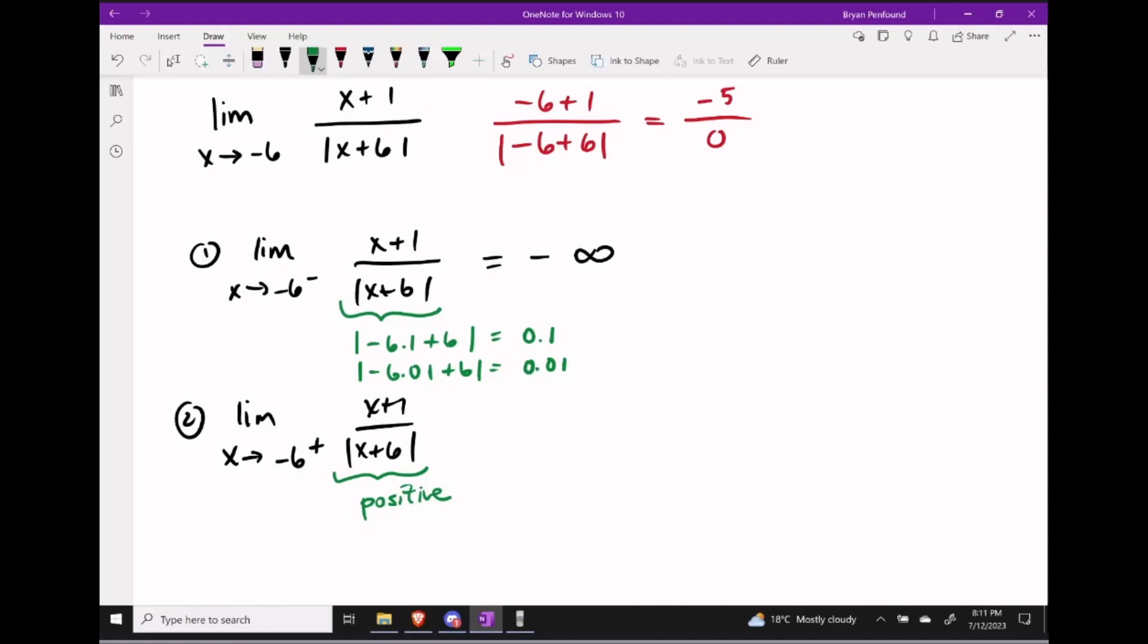these absolute value bars are going to ensure that the denominator ends up being a positive value very close to the number 0. But what's happening in our numerator?